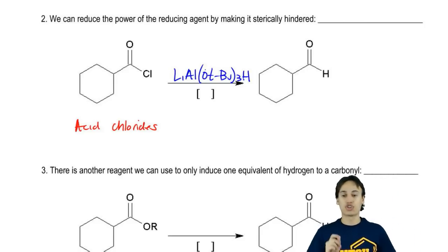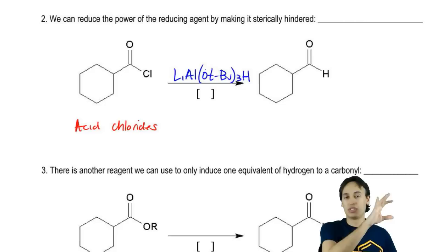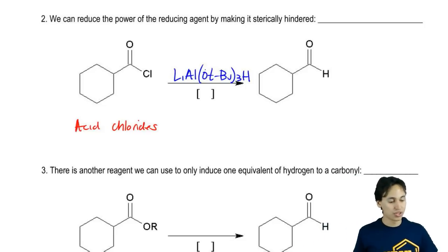As you can see, tert-butoxy groups because I basically have ethers made out of these O-t-butyl groups and then I have only one hydrogen left over that's actually going to react. The other groups don't.